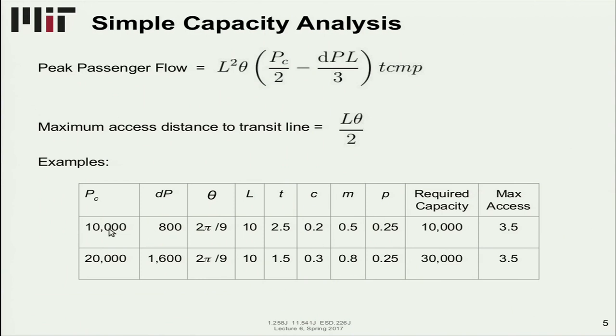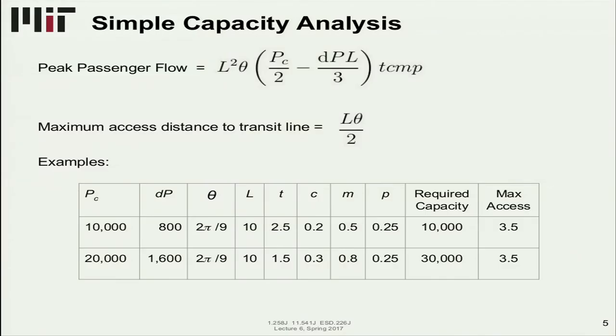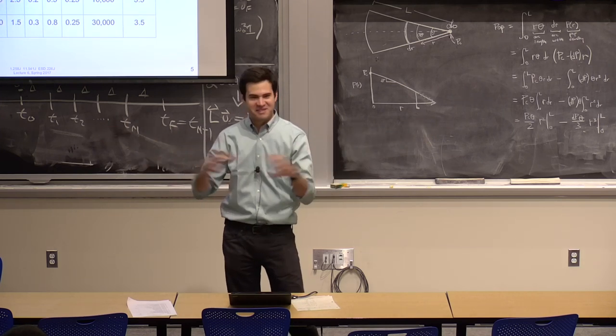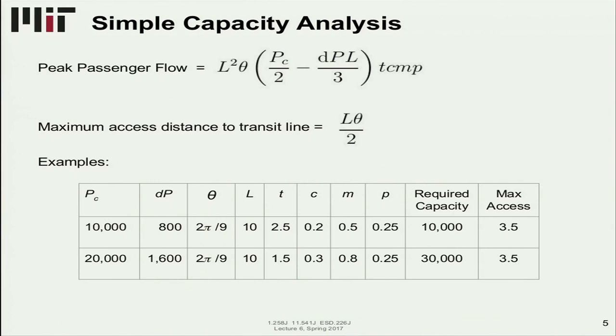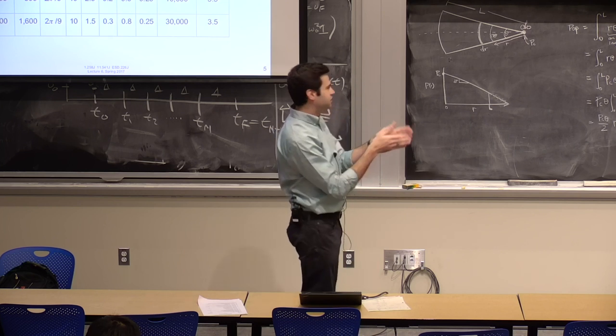We'll just plug in for two examples. We have two scenarios here. One where the population density in the CBD is 10,000, another one where it's 20,000. For reference, in New York City, the population density is about 28,000. So these are not as high as those very dense cities. Here are some numbers. We're assuming a 40 degree angle for the shape of this.